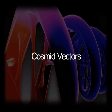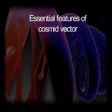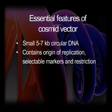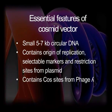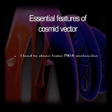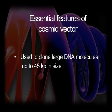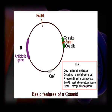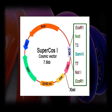The third category of vectors is cosmid vectors. A cosmid vector is a combination of a plasmid and bacteriophage lambda. Its essential features are: it is a small, 5 to 7 kilobase circular DNA containing an origin of replication, selectable markers, and restriction sites from plasmid vectors, plus cos sites from phage lambda needed for packaging into phage particles. Cosmids are used to clone large DNA molecules up to 45 kilobases in size, so large genes can be cloned only in cosmids. Cosmids can replicate like a plasmid in the host bacterial cell and be packaged into phage particles when cos sites are cleaved by endonuclease. Examples of cosmids are pJB, pWE, SuperCos1, etc.